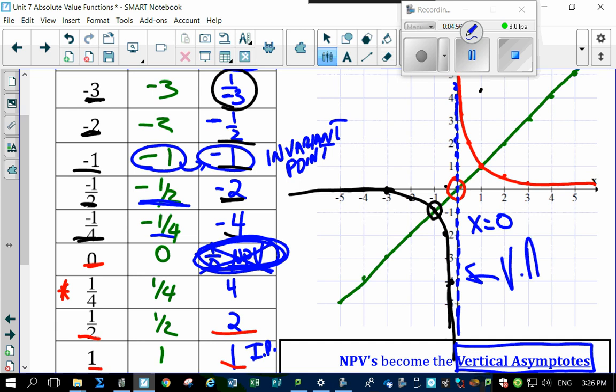We call this a vertical asymptote. V-A, a vertical asymptote, which means the line gets really, really close to it, but never touches. And that's determined right here by your NPVs. Is that not interesting? Cool.